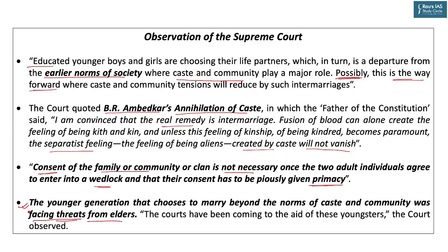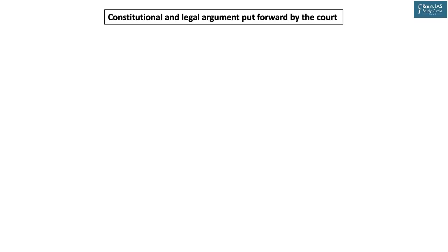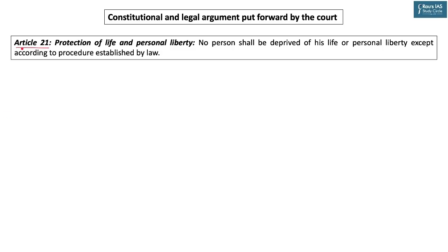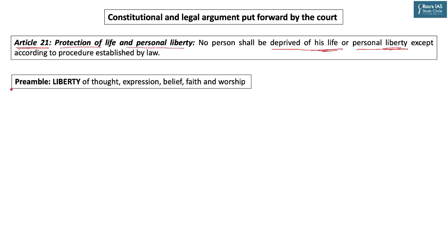The issue of intermarriage is hinged around Article 21, which gives the fundamental right to protection of life and personal liberty. Article 21 reads: 'No person shall be deprived of his life or personal liberty except according to procedure established by law.' Citizens cannot be deprived of these rights arbitrarily. Attached to the right to life is the right to personal liberty, which is also prominently mentioned in the Preamble.